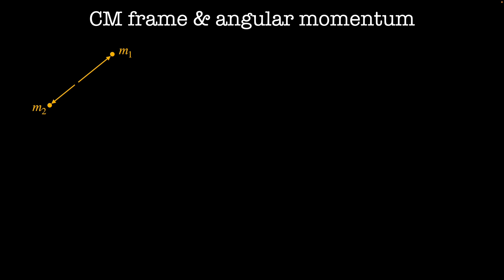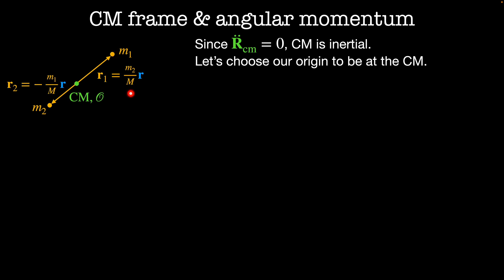We've showed that Rcm is an ignorable coordinate, which means that the center of mass can't accelerate. So we can choose an inertial coordinate system where the center of mass is at its origin and its velocity is equal to zero. In this coordinate system, the position of m1 is given by r1 which equals m2 over the total mass times the relative position r, and mass m2 is located at minus m1 divided by the total mass times the relative position r. These particles have velocities v1 and v2 respectively.